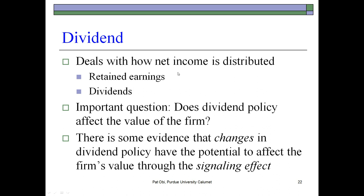Dividend policy deals with how the firm's net income is actually divvied up. When a firm makes money in the form of earnings after tax, it has a choice to either reinvest the money back into the firm as retained earnings, or pay it out to investors as dividends. The proportion of net income paid out as dividends is referred to as the dividend payout ratio. For example, if a firm's dividend payout ratio is 40%, then $0.40 of every dollar earned on an after-tax basis is paid out to stockholders, and the remaining $0.60 is reinvested back into the firm.